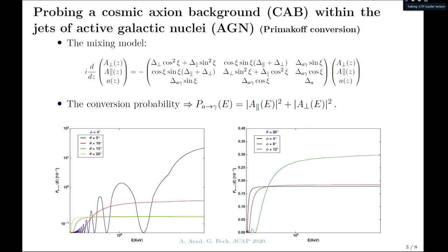The first part of my work focused on studying axion conversion to photons inside the astrophysical environment of the jet of the M87 active galactic nucleus. For this interaction to happen, it requires a background magnetic field, which exists within the jet of active galactic nuclei. In this model, we consider relativistic axions, governed by the Klein-Gordon equation for the axion field coupled with Maxwell equations for the electromagnetic field.